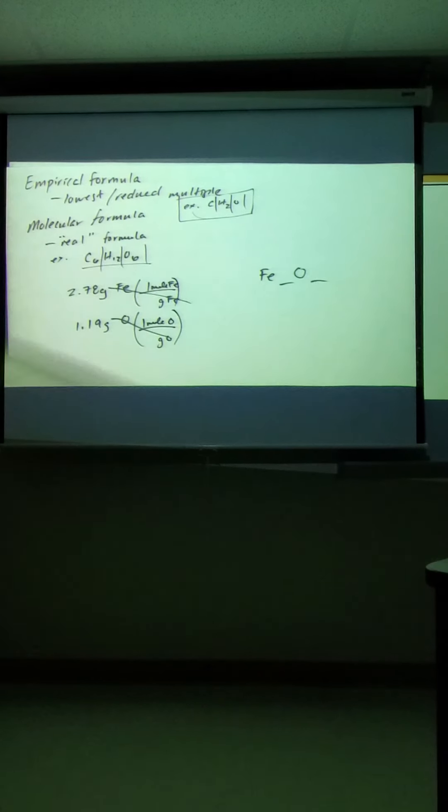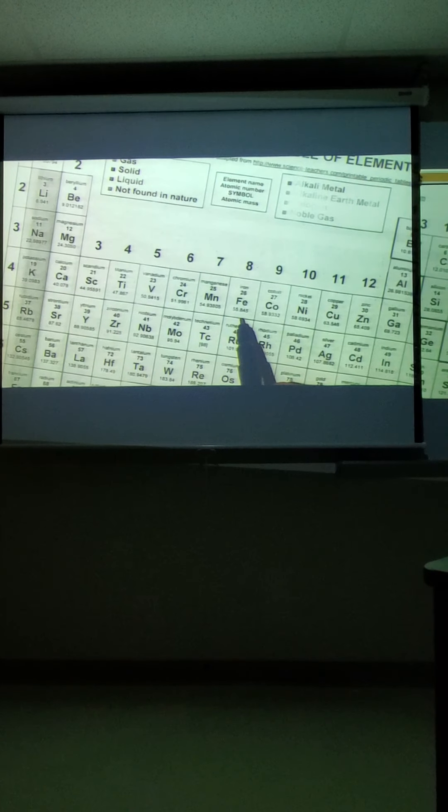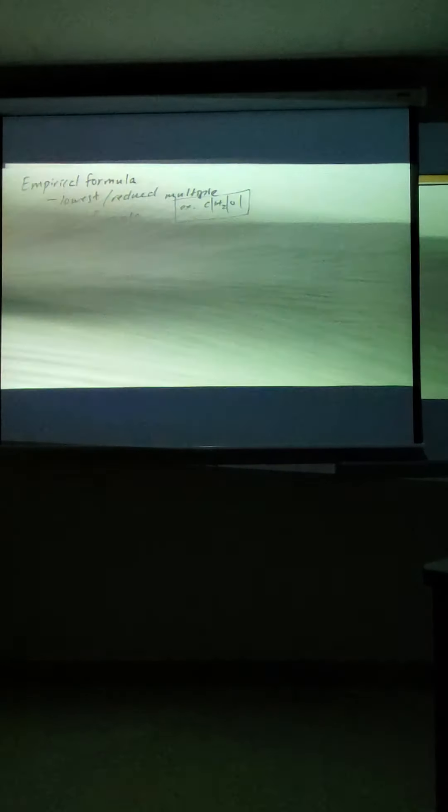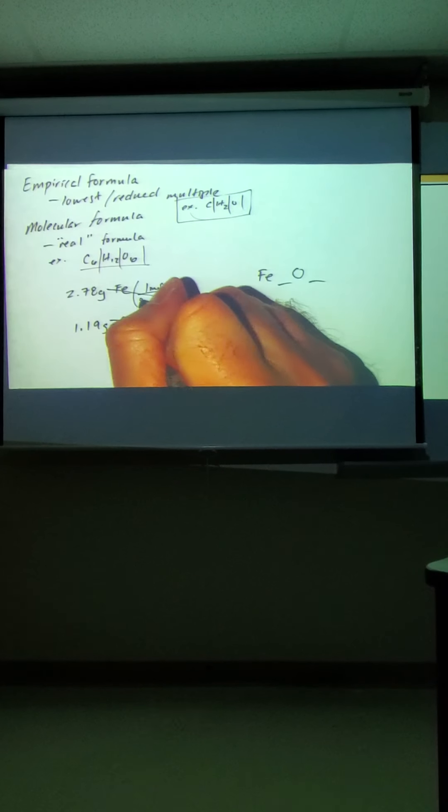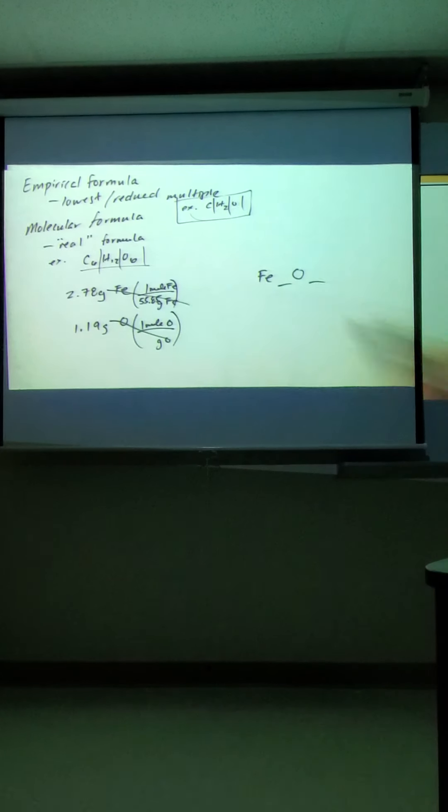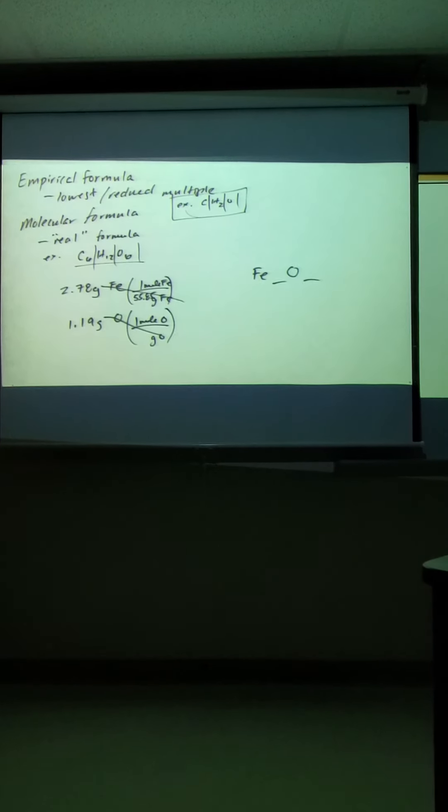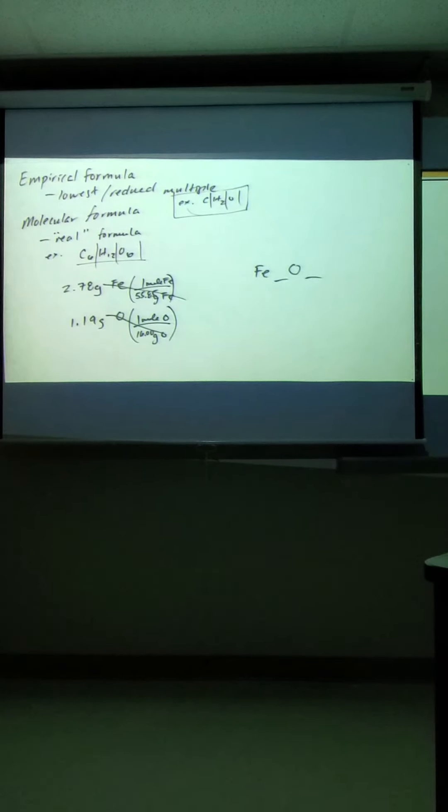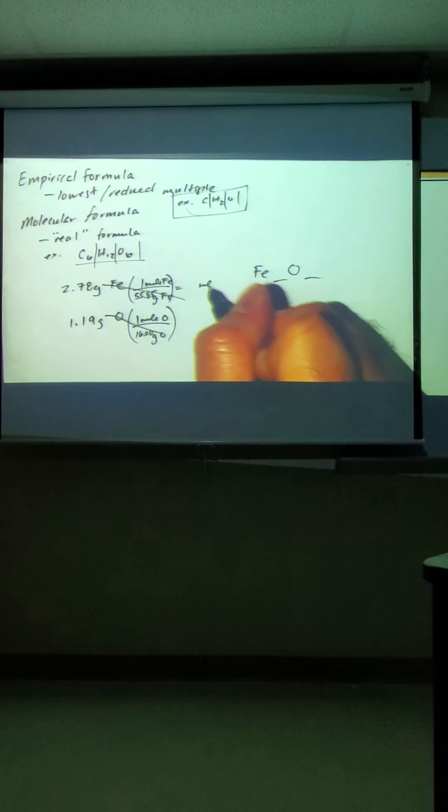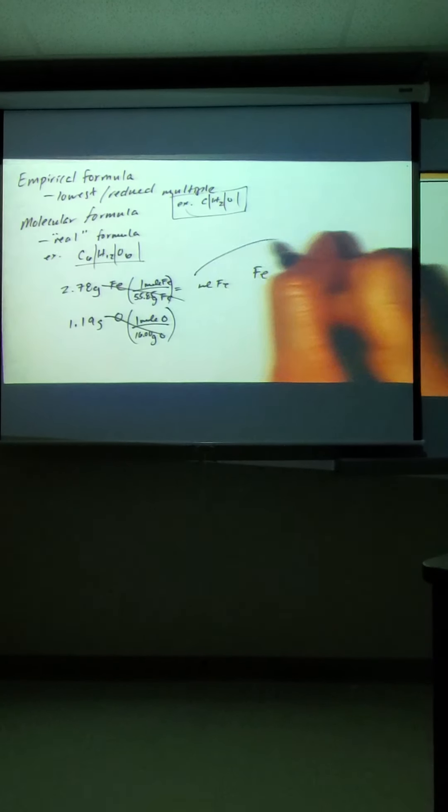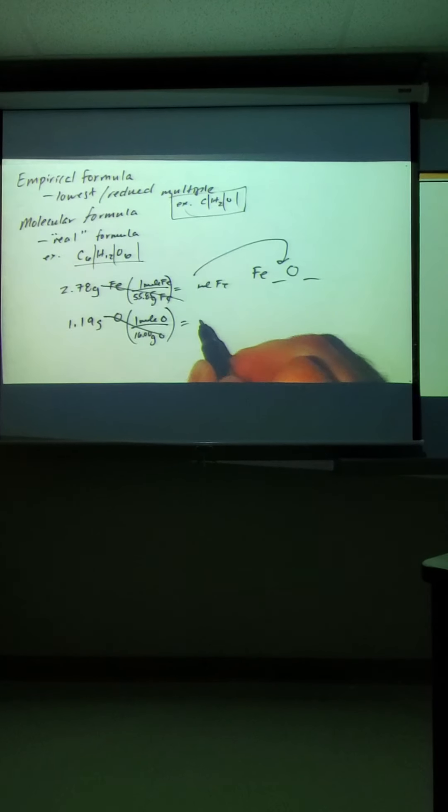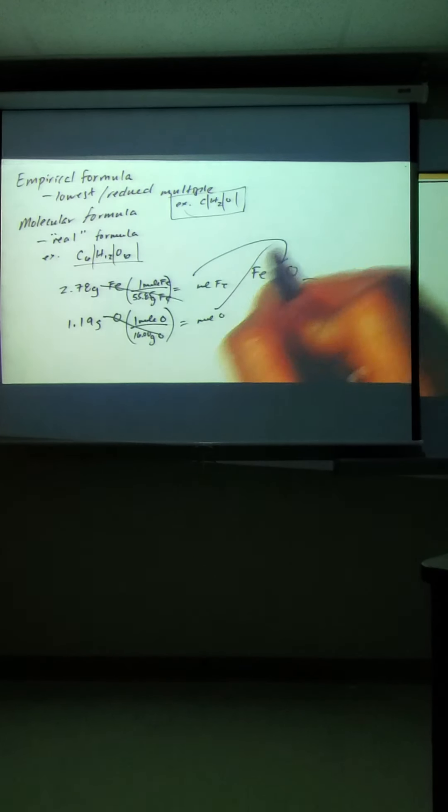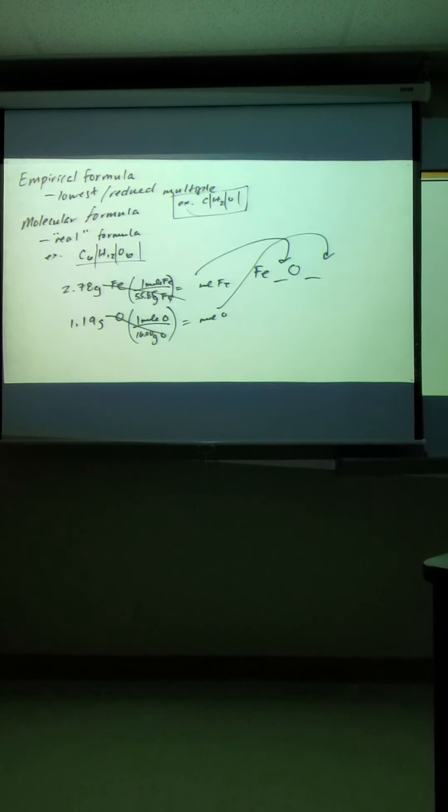On the periodic table, we can find iron's mass at 55.85. And for oxygen, we can find its mass of about 16 if we round up. Close enough. Now we're going to get moles of iron. That'll go here. We're going to get moles of oxygen.